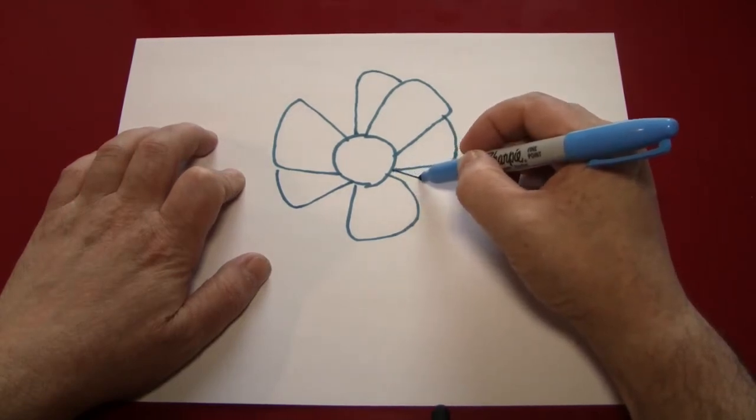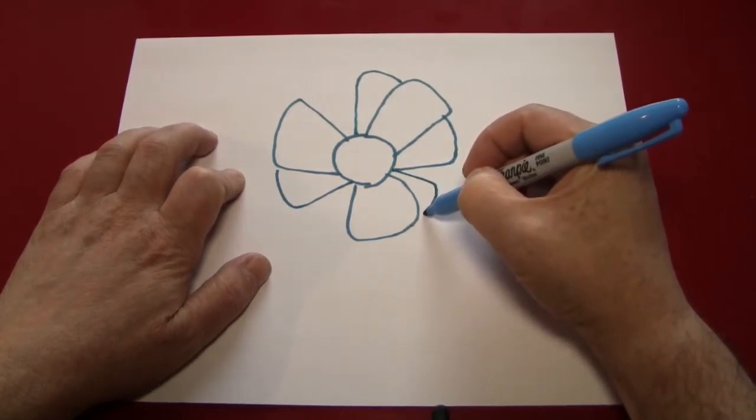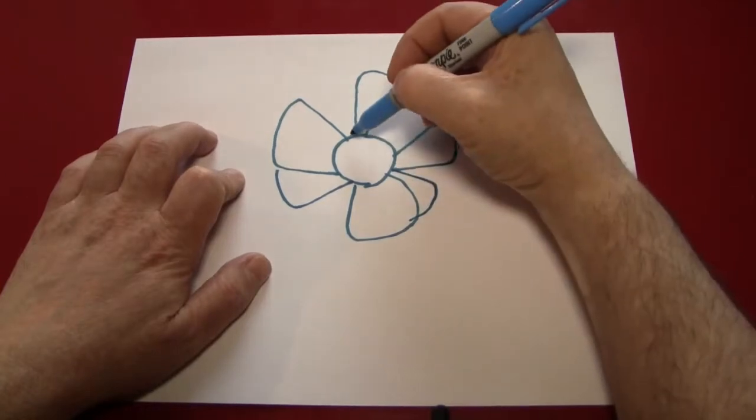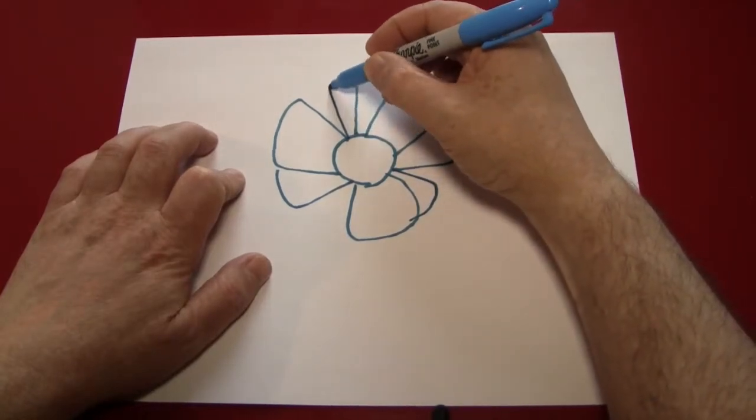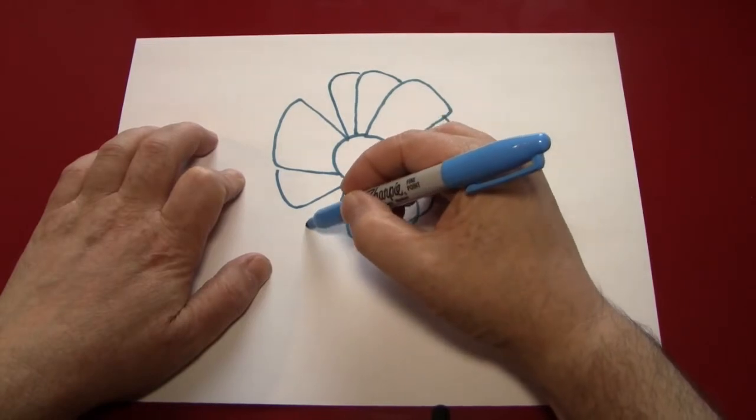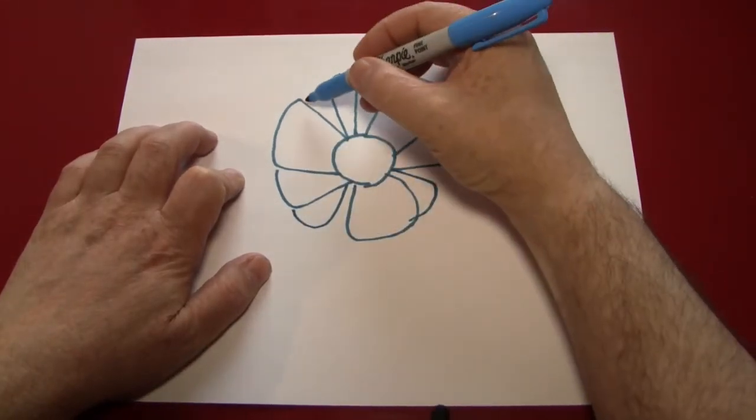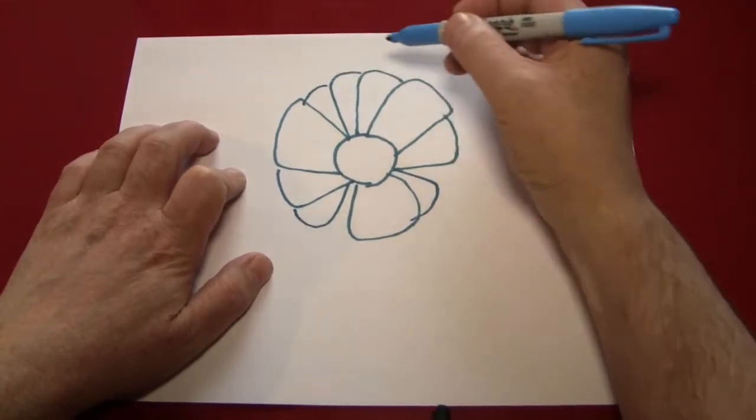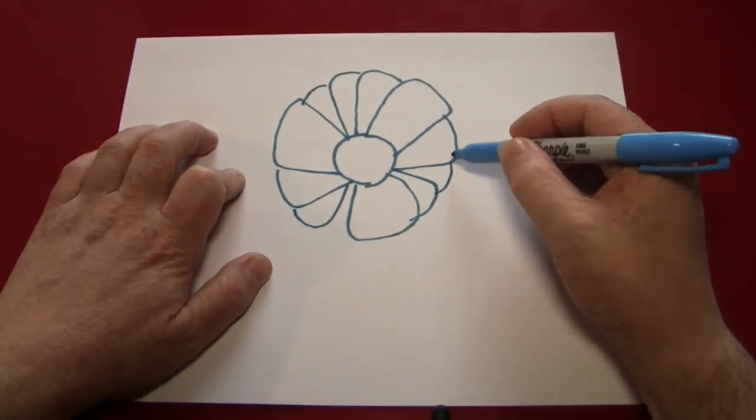When you've run out of room for doing this, the next thing you're going to want to do is make the last row of petals. The way we'll do that is by simply making little curves over the spaces that we have left over.